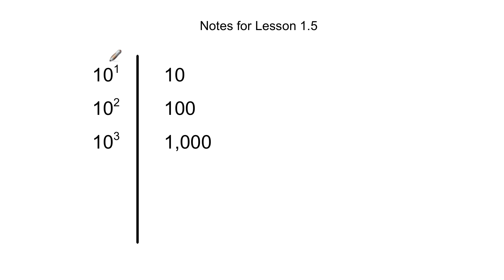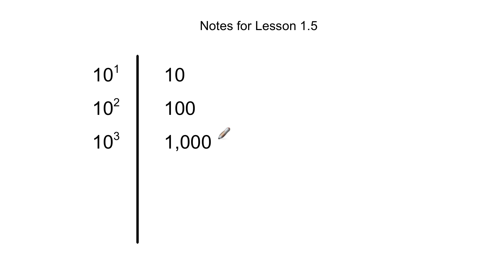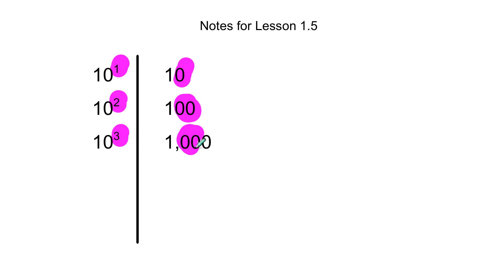Here are the notes for lesson 1.5: ten to the first power is one ten. Ten to the second power is ten times ten, which is one hundred. Ten to the third power is one thousand. And here is the pattern: when you're multiplying by ten with an exponent of one, the answer has one zero. When multiplied by ten to the second power, the answer has two zeros. When multiplied by ten to the third power, the answer has three zeros.